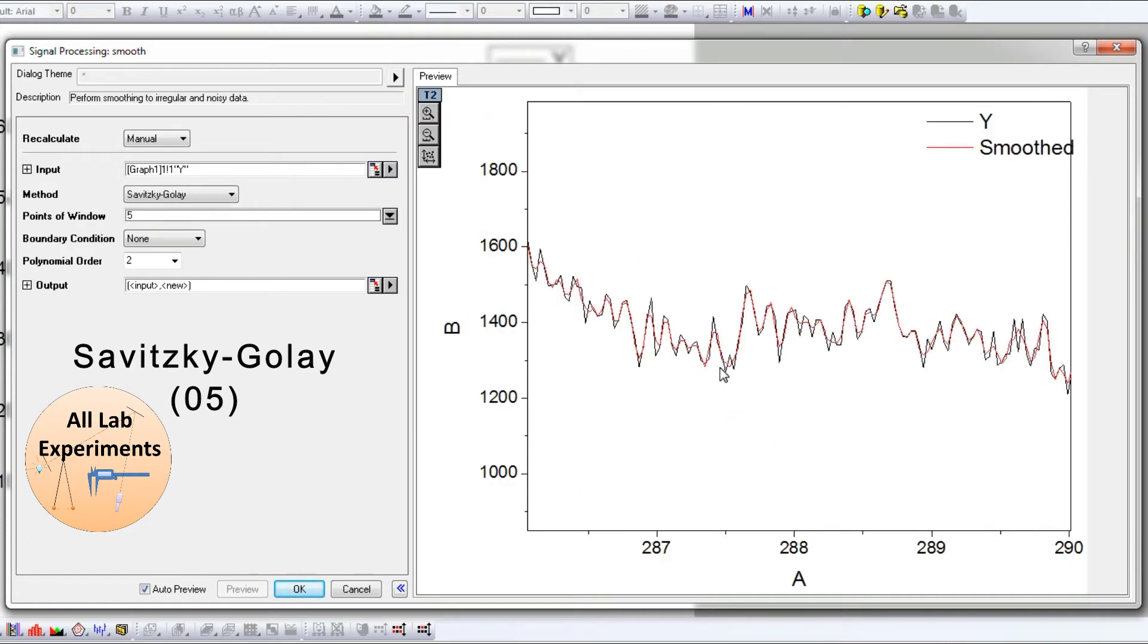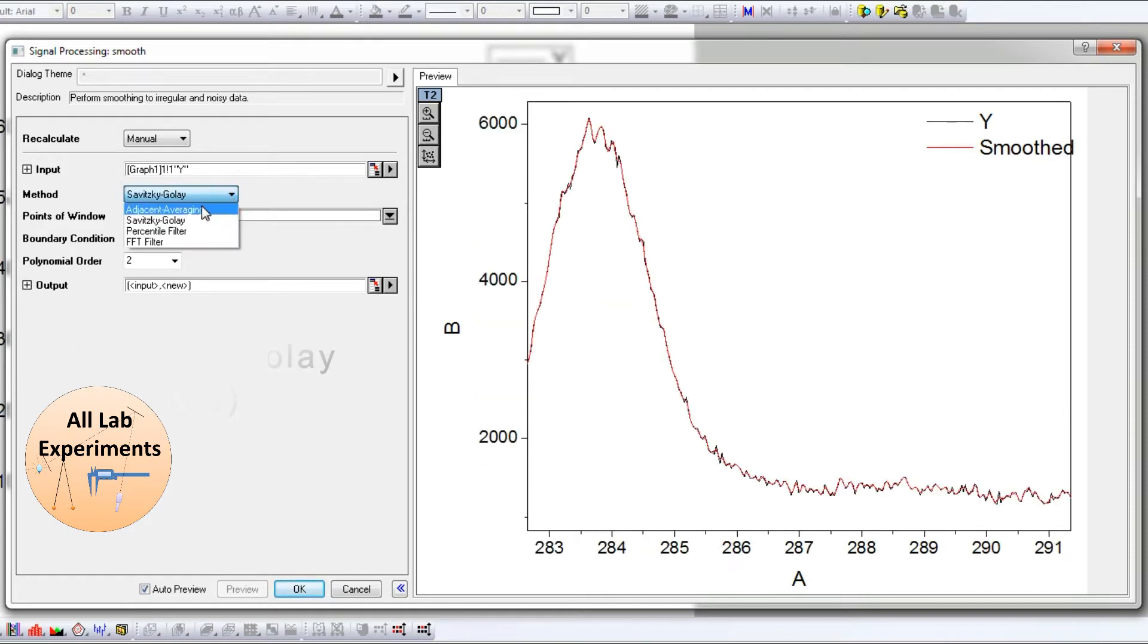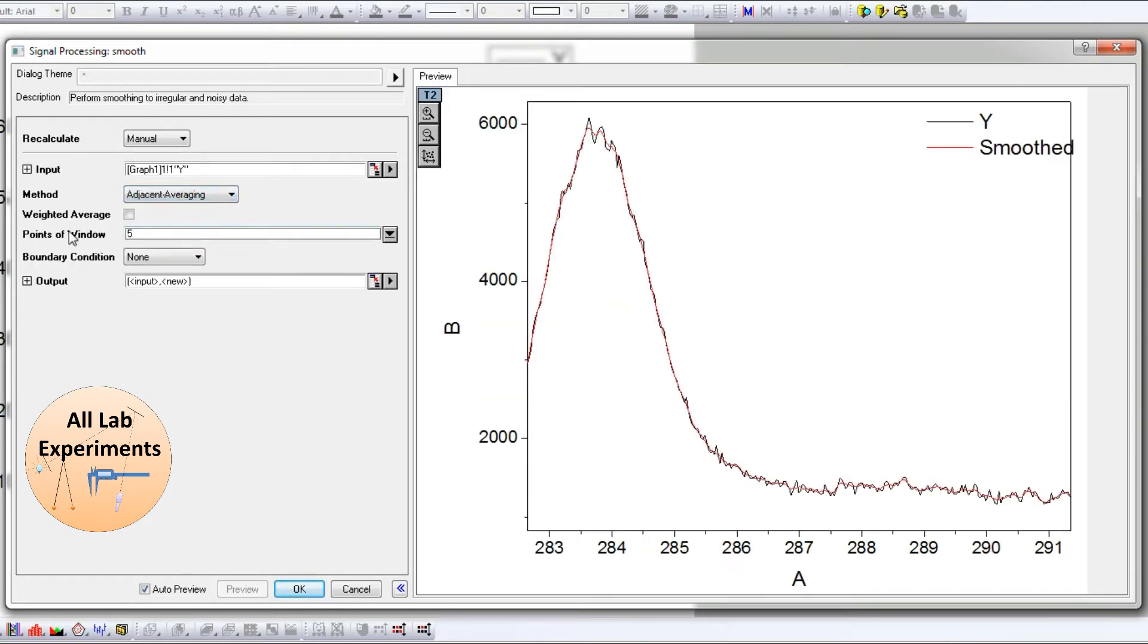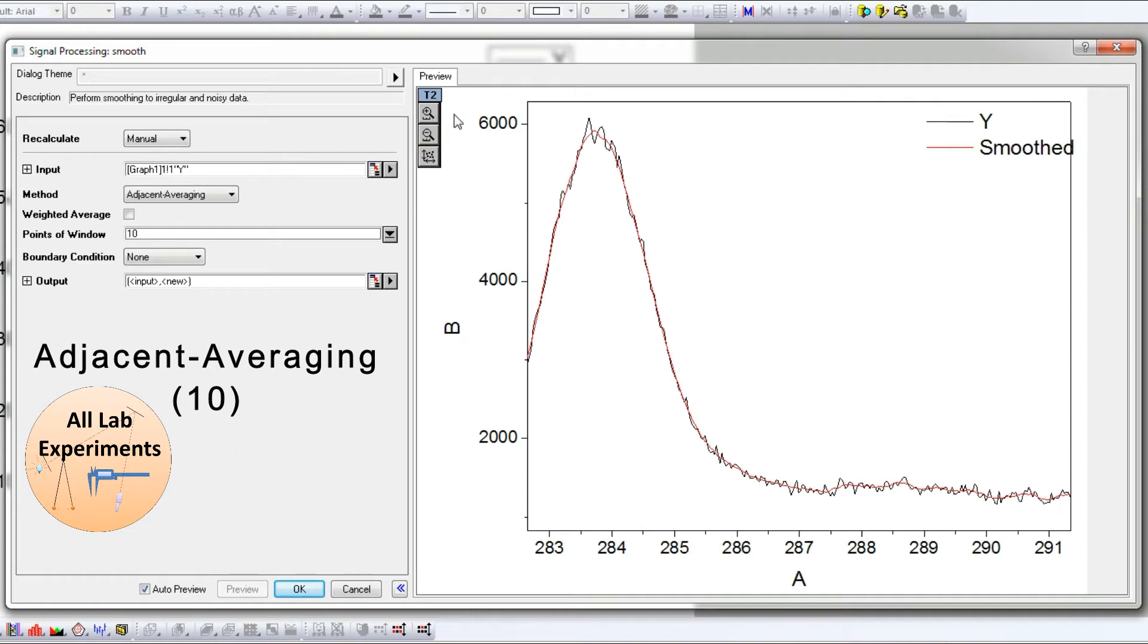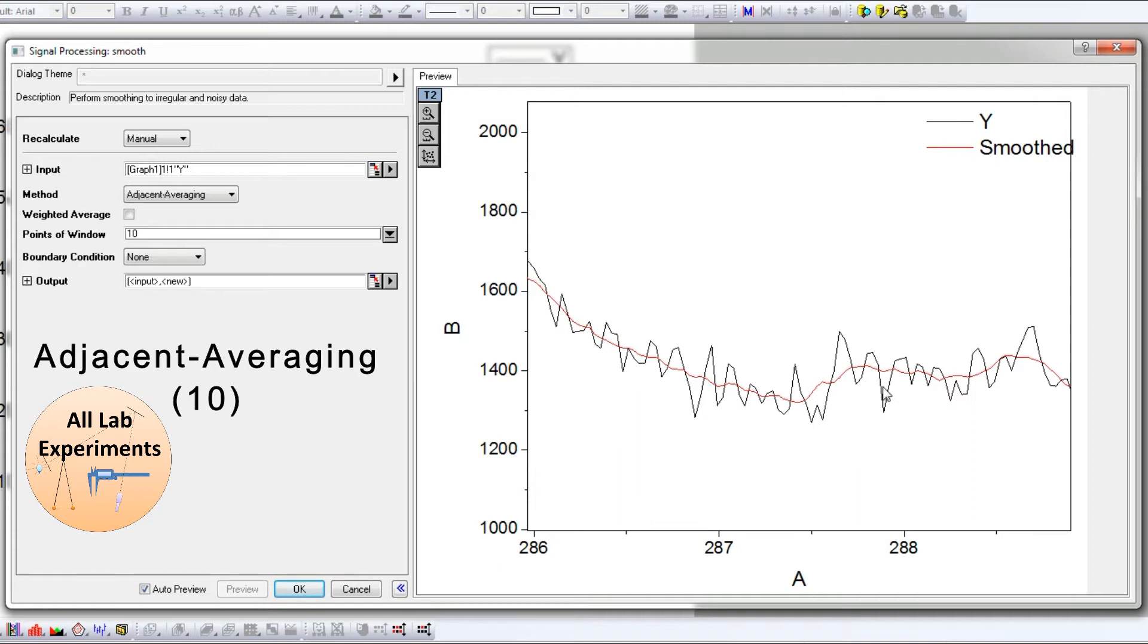Now I am increasing the number of points from five to ten. If I increase this number of points to ten, we will see that in Adjacent Averaging the smoothness has increased.